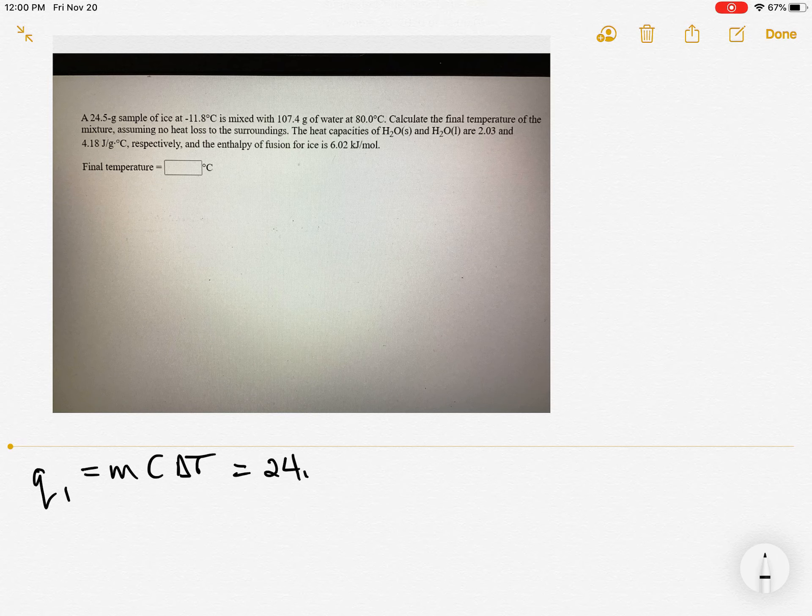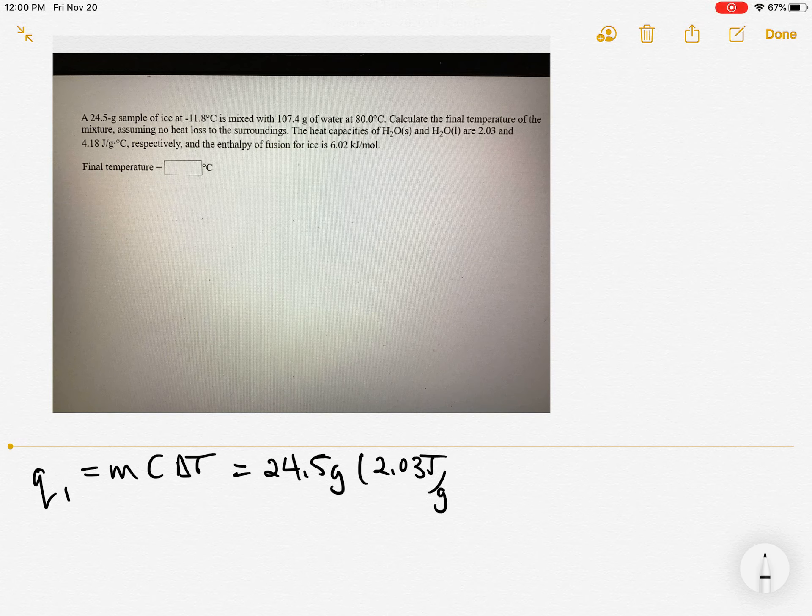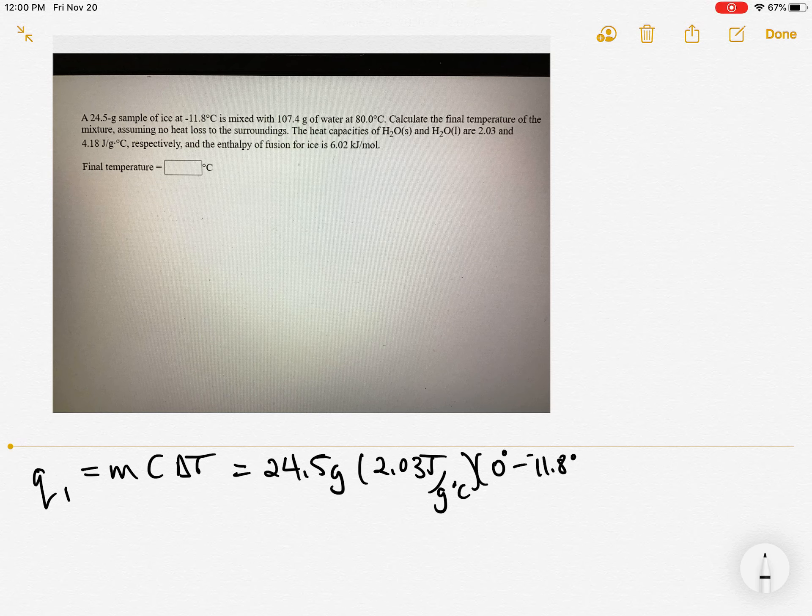So you plug in 24.5 grams times the heat capacity of ice, which is given as 2.03 joules per gram degrees Celsius. And then we're going to heat it up to the freezing point. So that's the final temperature is zero minus 11, minus 11.8 it started at.